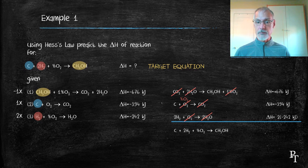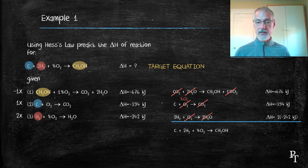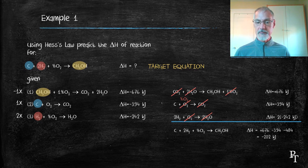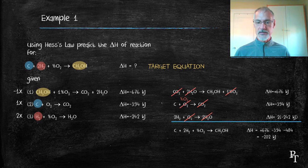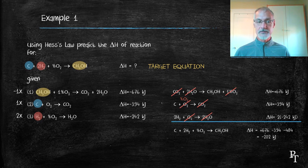Therefore, I'm starting and finishing at the same place. As a result, I can put together their heats and figure out the overall heat for this reaction as negative 202 kilojoules.